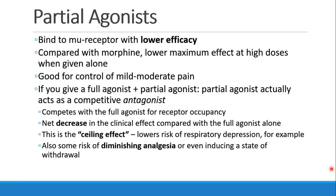Now that we've talked about all the strong opioid agonists, we're going to talk about other drugs that work at the opioid receptor. Partial agonists, as we talked about in the first set of recordings, are drugs that bind to a receptor with lower efficacy. In this case, we're talking about mu receptor partial agonists. Compared to morphine, they have a lower maximum effect, even at high doses when given alone.